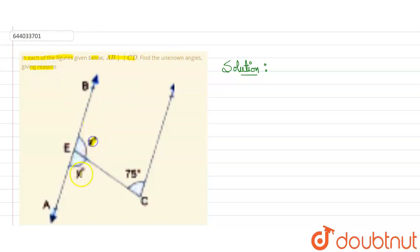So we need to find angle x and angle y, and this line CD is parallel to AB. Here it is D, this is CD, parallel to AB.